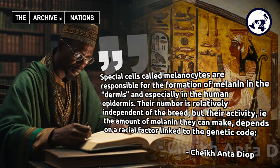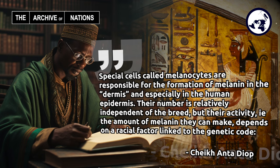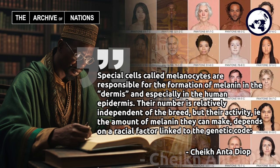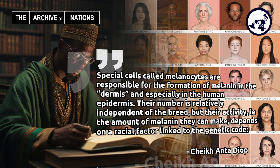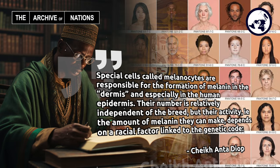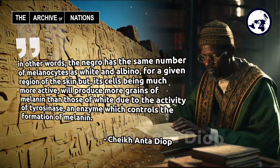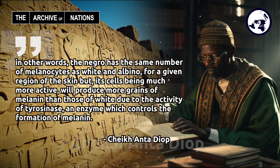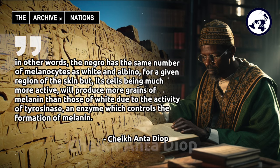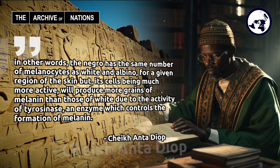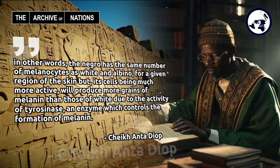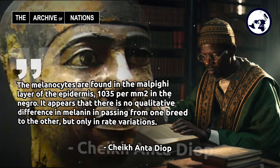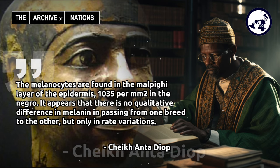Special cells called melanocytes are responsible for the formation of melanin in the dermis and especially in the human epidermis. The number is relatively independent of the breed, but their activity — i.e., the amount of melanin they can make — depends on a racial factor linked to the genetic code. In other words, the Negro has the same number of melanocytes as white and albino for a given region of the skin, but its cells, being much more active, will produce more grains of melanin than those of white, due to the activity of tyrosinase — an enzyme which controls the formation of melanin. The melanocytes are found in the Malpighi layer of the epidermis, 1,035 per mm² in the Negro.